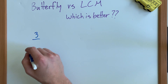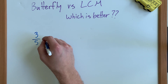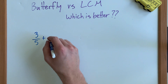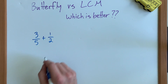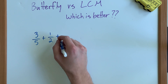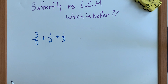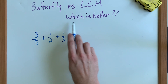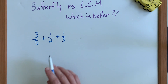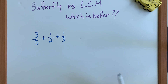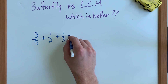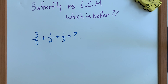When you are asked to add or subtract fractions that have different denominators, you have a couple different tools that you can use to solve this problem. What I'm going to do today is go through a couple problems and walk through the thinking process so that we can answer this question: butterfly method versus least common multiple — which one is better? Both of them will work. And how do we know what to do?